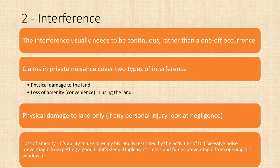The first main element to consider is interference. This interference needs to be a continuous interference rather than a one-off occurrence, though one-off occurrences can still constitute a nuisance where physical damage has occurred. Claims in private nuisance cover two types: physical damage to the land, which is usually easier to prove, and loss of amenity or convenience in using the land — for example, excessive noise preventing sleep, unpleasant smells or fumes preventing the claimant from opening windows, using the garden, or putting washing out.